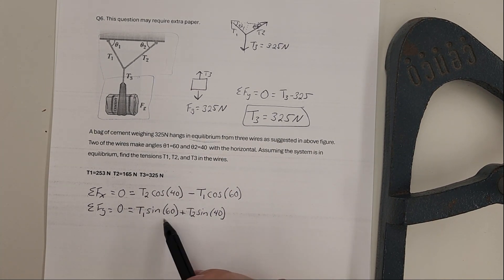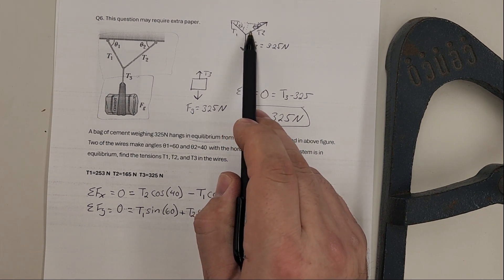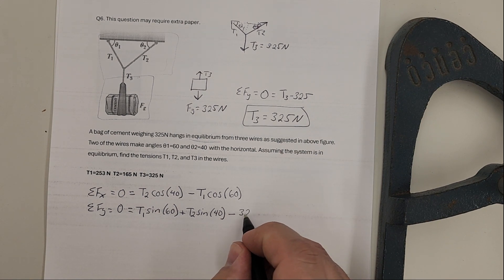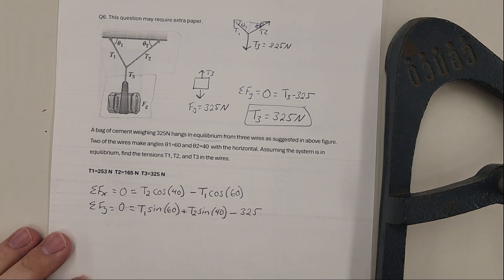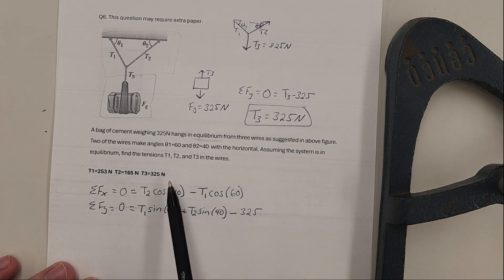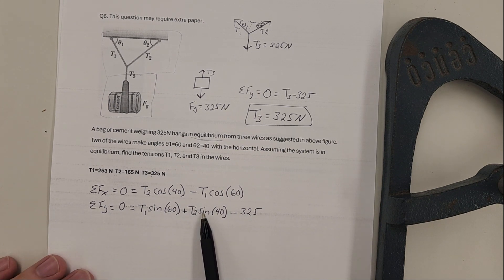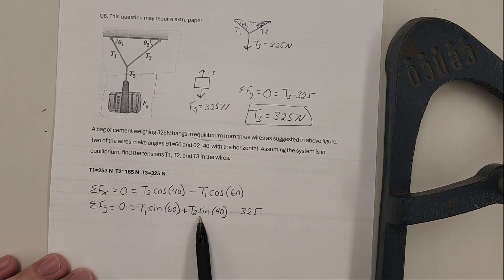Then T3 is pointing down, so we end up with minus 325. I've got my T3 here, I've plugged that in. I only have T1 and T2, but T1 and T2 show up in both of these equations. So this is a system of equations - I have two unknowns and I have two equations. What I have to do is solve for one of them, plug it into the other one.